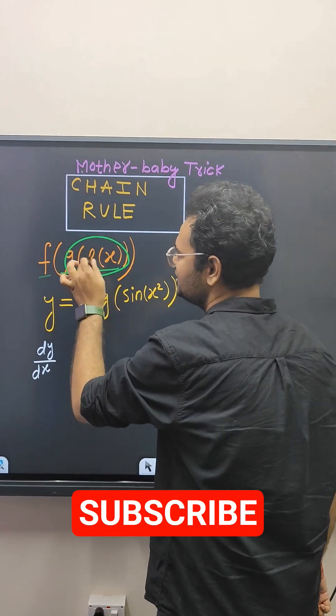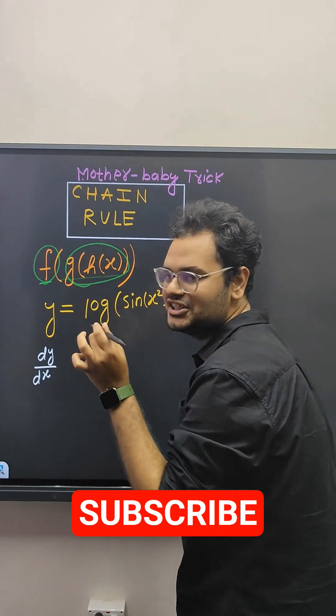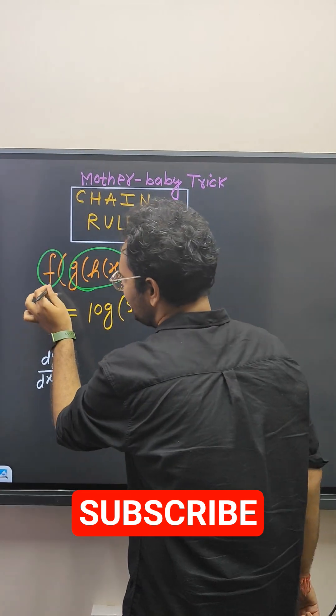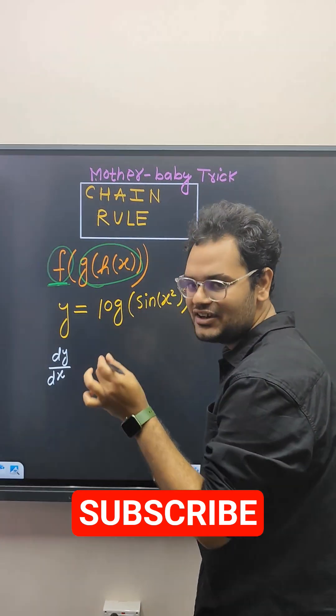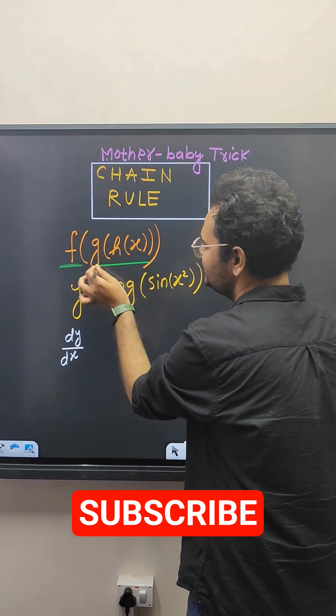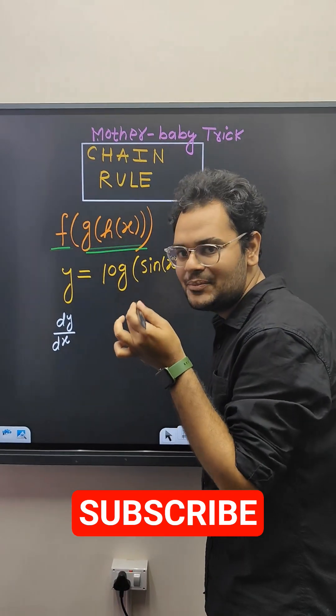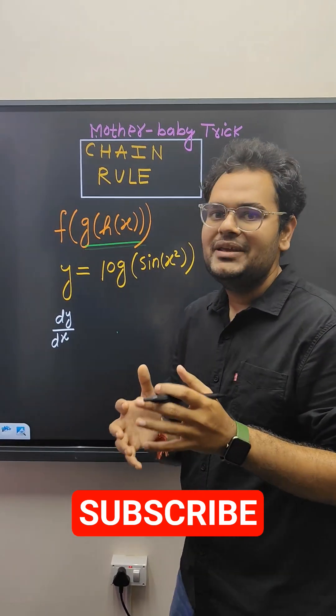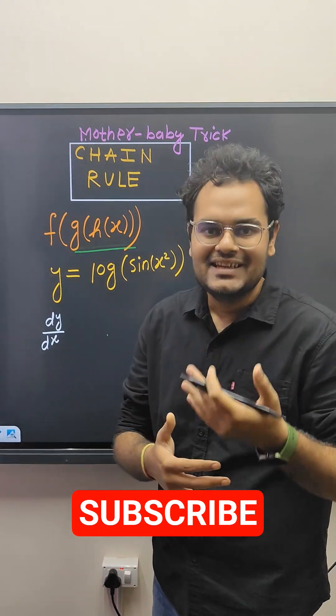Here, this entire function is within the larger function. The function which is outside is called the mother function and the function which is inside is called the baby function. There can be multiple babies to a single mother.